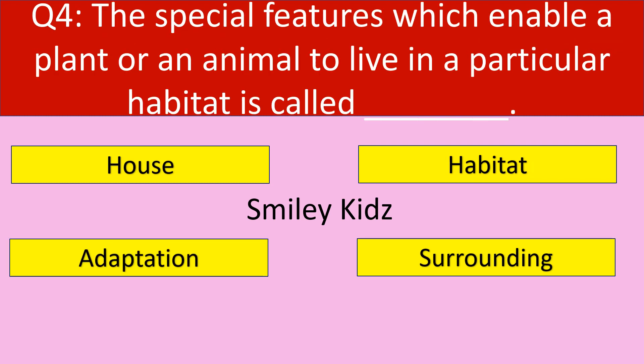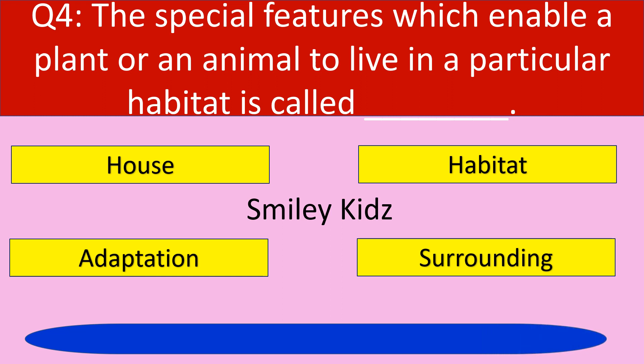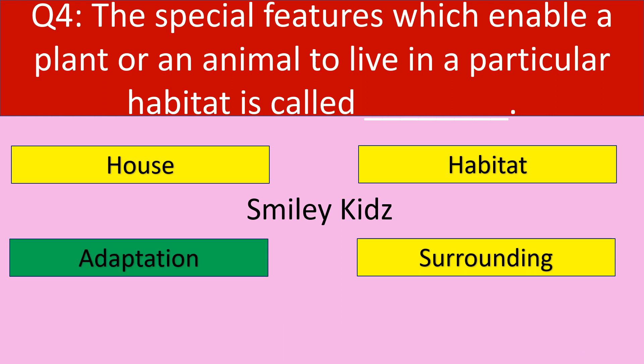Question number 4. The special features which enable a plant or an animal to live in a particular habitat is called. Options are: house, habitat, adaptation, surrounding. The correct answer is adaptation. The special features which enable a plant or an animal to live in a particular habitat is called adaptation.